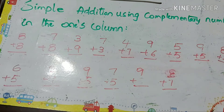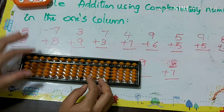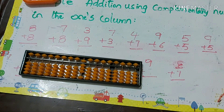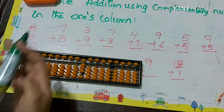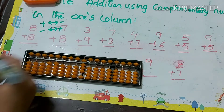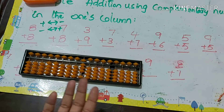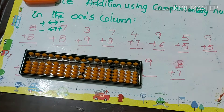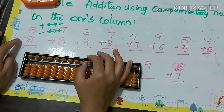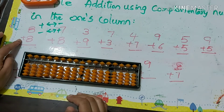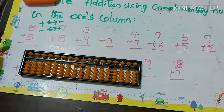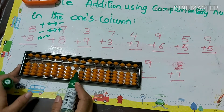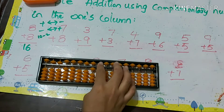Simple addition using complementary numbers with respect to 10. First problem: 8 plus 8. We can't use the small friend for 8, so we must use the big friend method — we don't have sufficient beads to add 8 directly. The formula for plus 8 is +10 minus 2. Since it is a positive value, that 10 must be positive. So the answer is 16: we apply +10 minus 2.